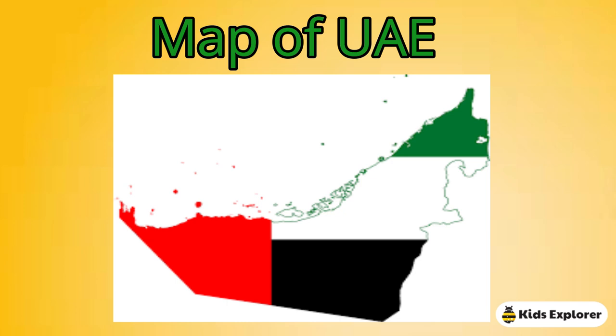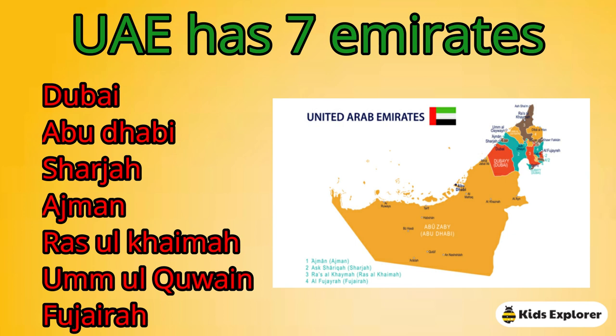This is the map of UAE. UAE has seven Emirates. Their names are Dubai, Abu Dhabi, Sharjah, Ajman, Ras Al Khaimah, Umm Al Quwain, and Fujairah.